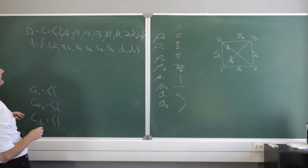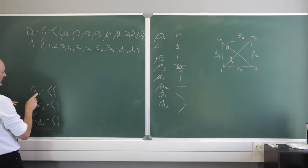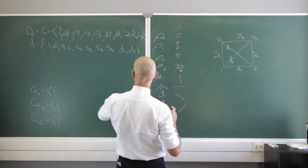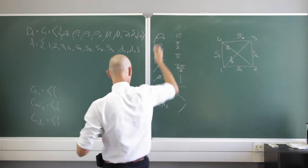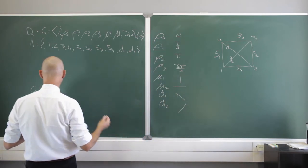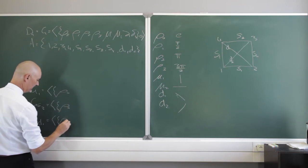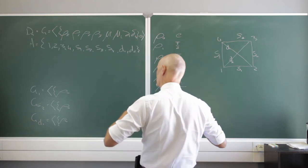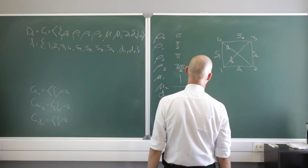So now let's just look at the stabilizer of corner 1. Which one of these elements in my group will stabilize 1? I can do any one of these and 1 will stay where it is. Definitely rho 0. Remember we proved that this is a subgroup, so it's got to be a group in its own right, so the identity element is there.